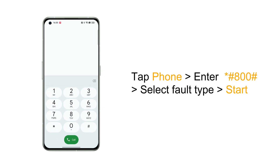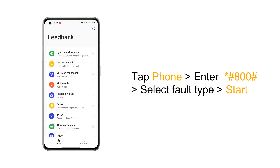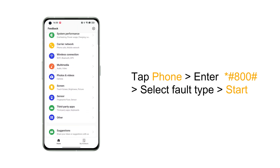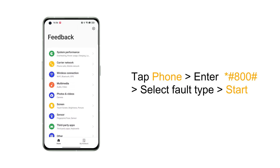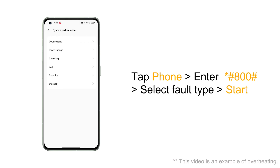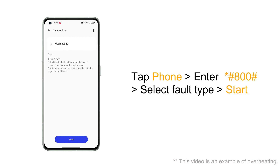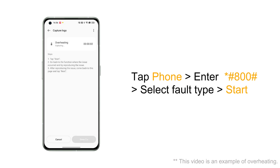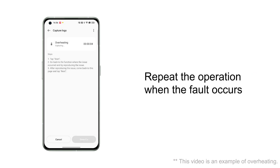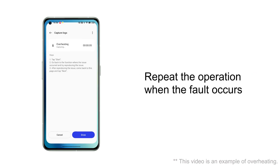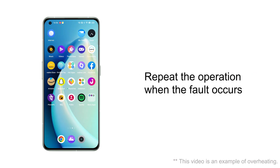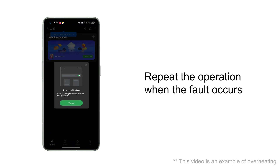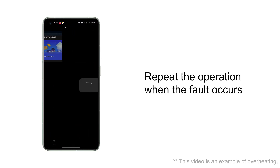Tap the phone icon, enter the string of characters on the dial pad, and select the type of fault you encounter. If there is a screen recording option under the fault type you selected, turn it on. After tapping Start, return to the desktop and start repeating the operations when the fault occurred until the fault appears.